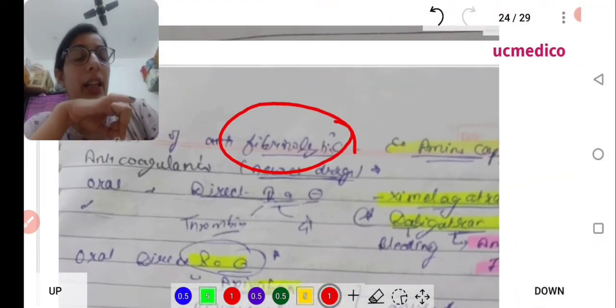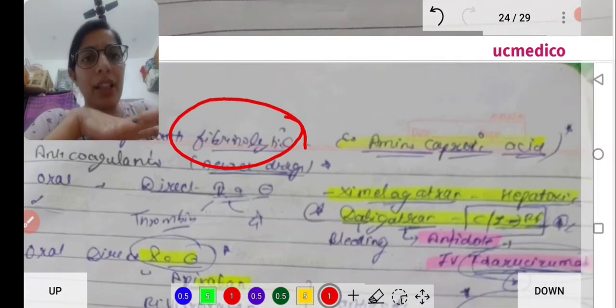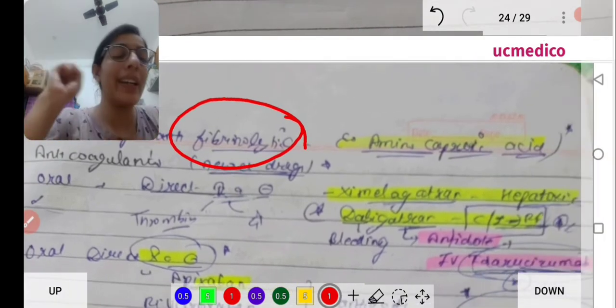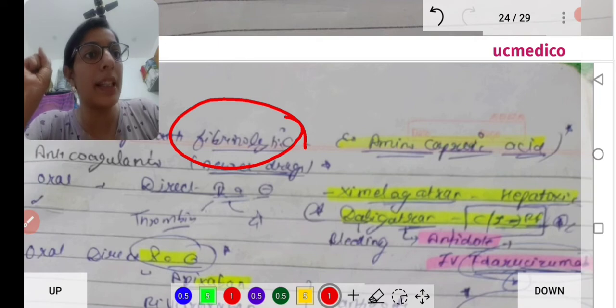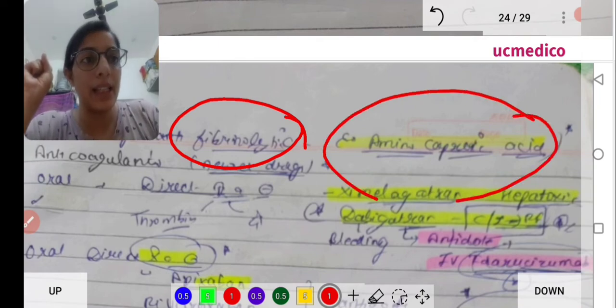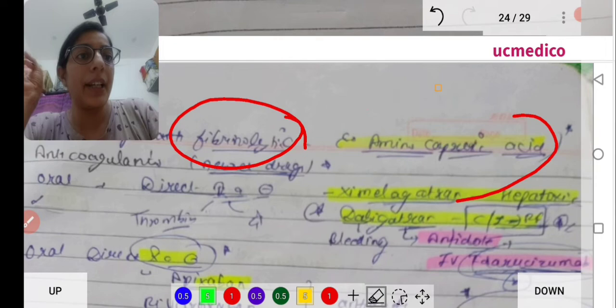Antidote for fibrinolytic drugs - this is asked many times in exams, one time in NEET-PG - that is epsilon aminocaproic acid. This is the antidote of fibrinolytic drugs given in excess.